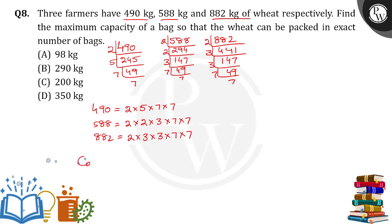Now what are the common factors? 2 is a common factor. 7 into 7 is a common factor. 2, 7, 7 is the common factor. Therefore, it is equal to product of the common factors: 2 into 7 into 7. 7 times 7 is 49, times 2 is 98.